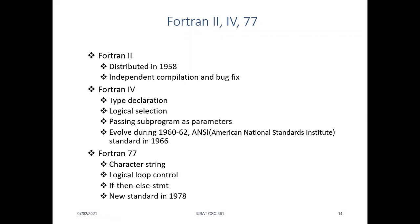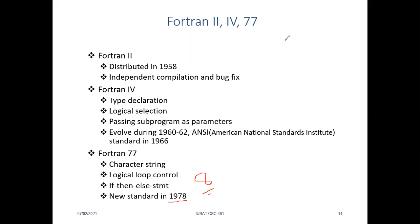Skipping directly to FORTRAN 77 — since there are no major changes in between — in FORTRAN 77, almost 20 years after FORTRAN I, we introduced character strings, logical loop control with break and continue statements, and a more capable if-else statement. Overall the language changed a lot over time. This time frame, 1977-78, is almost eight years after C was introduced, so you can understand how much languages changed across those 20 years.